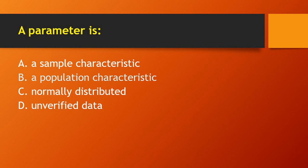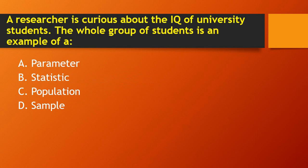Next question: a parameter is (a) a sample characteristic, (b) a population characteristic, (c) normally distributed, (d) unverified data. A parameter is a population characteristic. Next question: a researcher is curious about the IQ of university students. The whole group of students is an example of — parameter, statistic, population, or sample? The right answer is population.